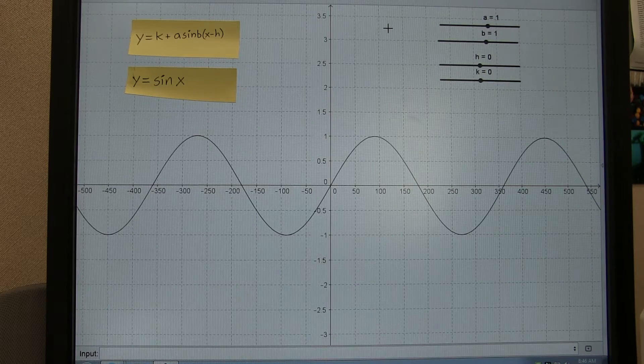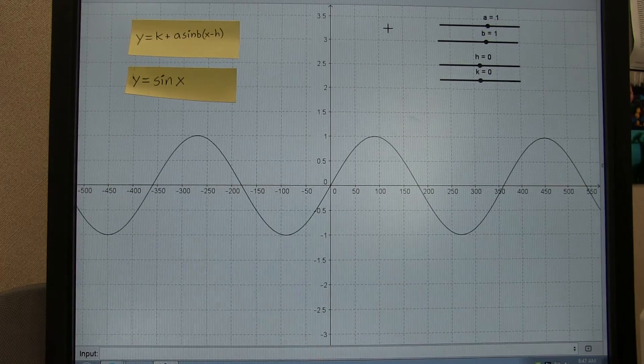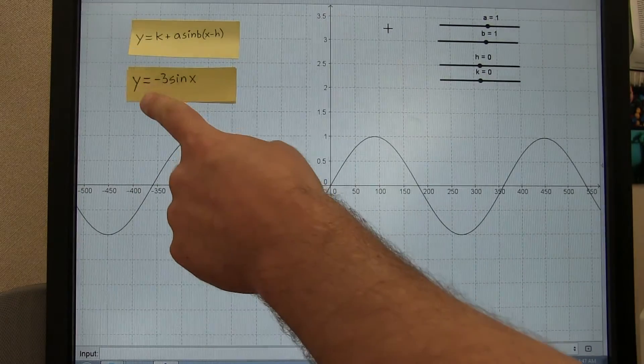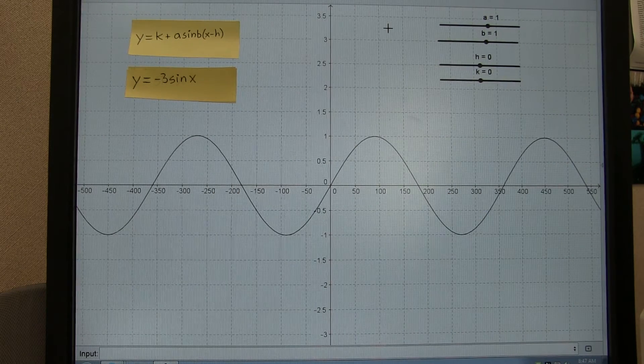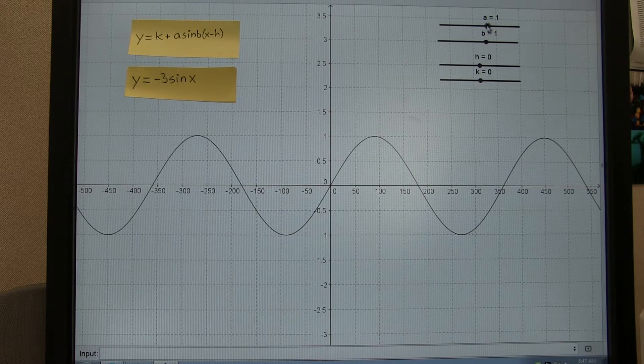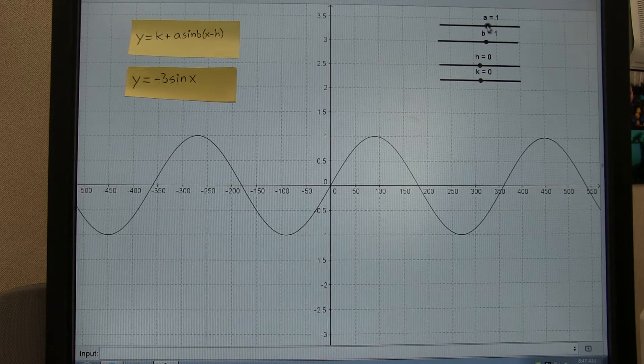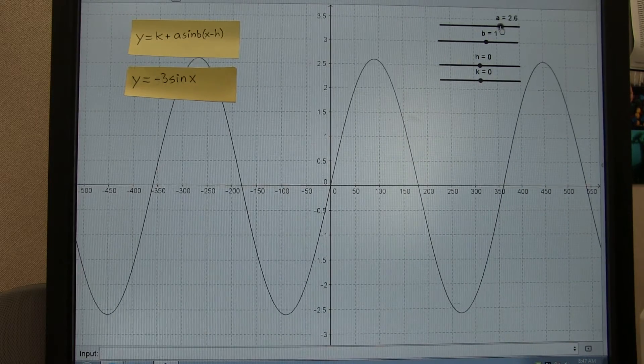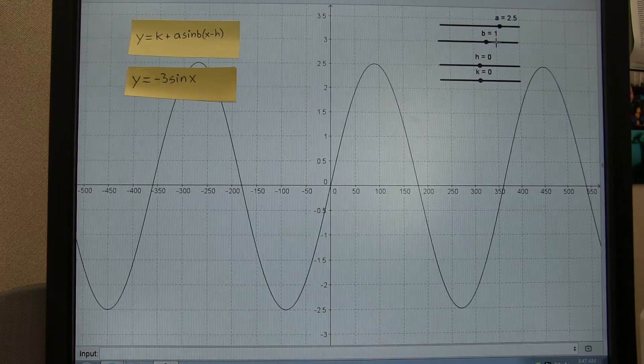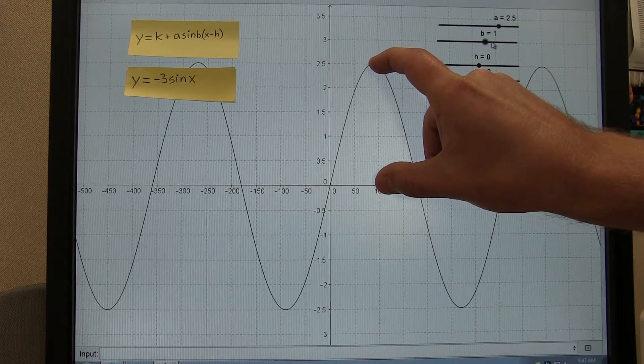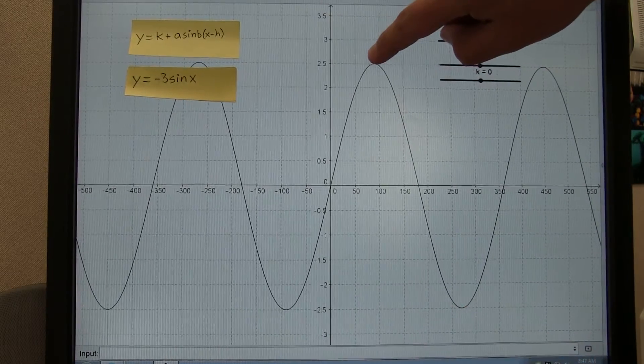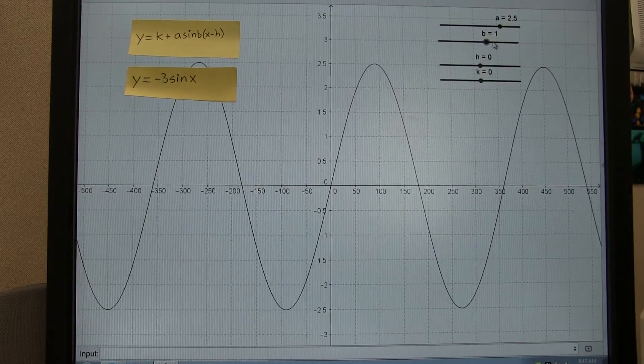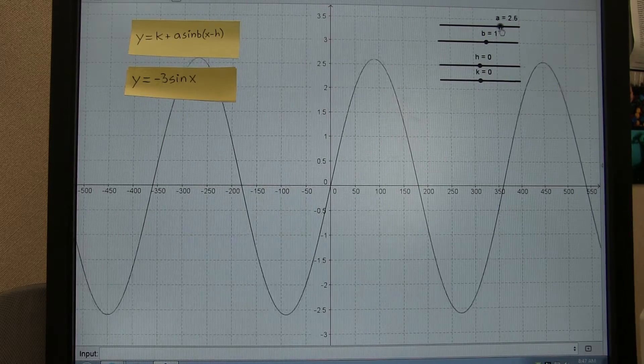The first parameter we're going to mess with is this parameter a. What if instead of graphing y equals sine x, we are graphing y equals negative 3 sine of x? Here's a slider on this program, and when I change it, as it increases, you notice these peaks and valleys also increase. This length right here is called the amplitude. It's half the total distance from the maximum to the minimum height-wise. Right now the amplitude is 2.5. In other words, a tells you the amplitude, but that's not the only thing a tells you.